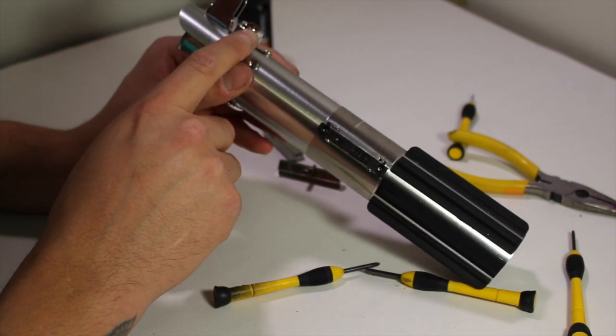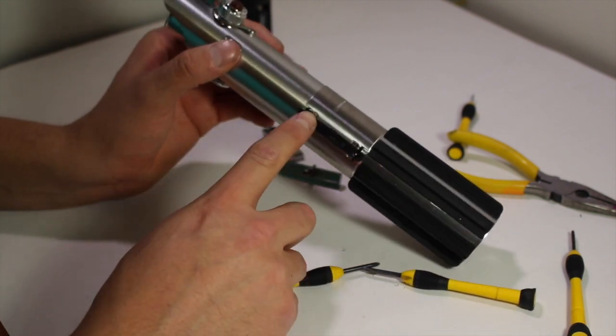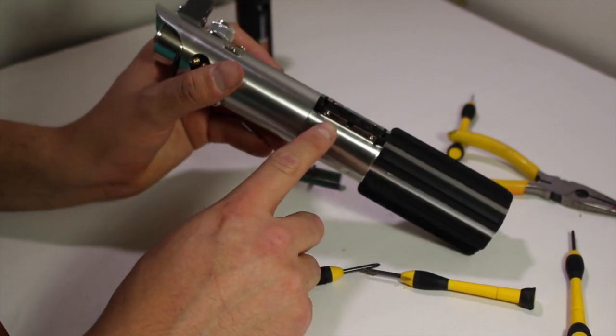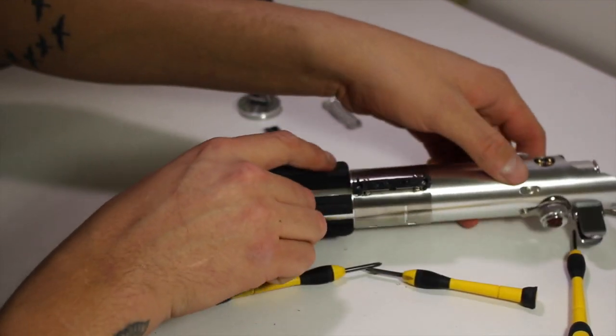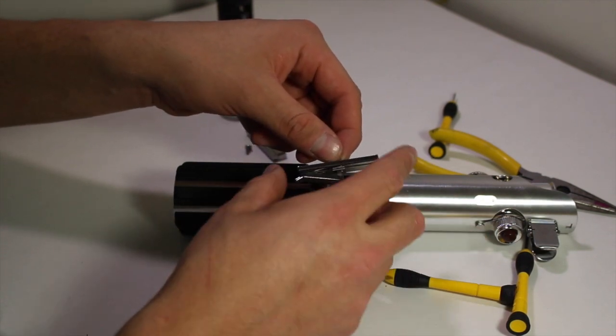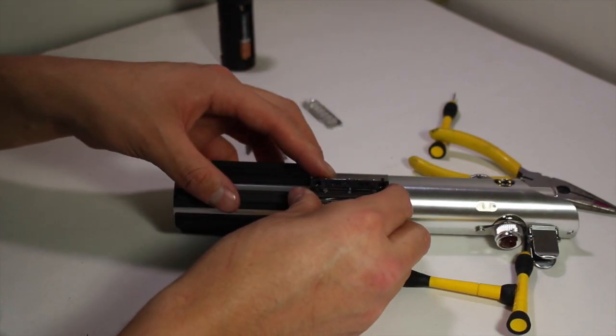This little clasp right here goes on the top side where the extruding button is.